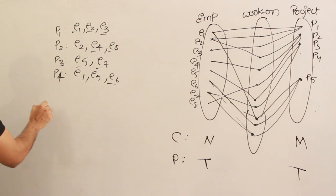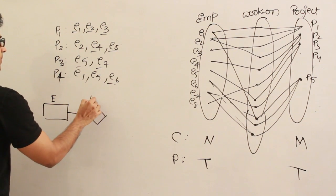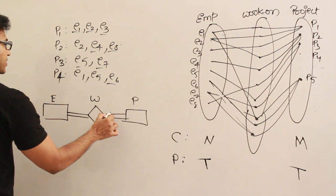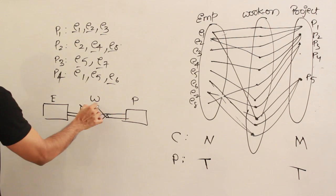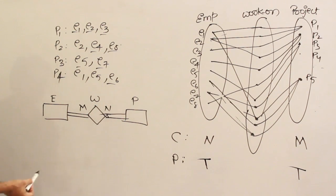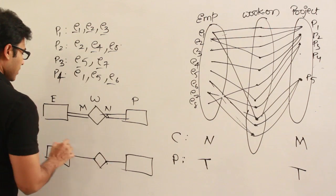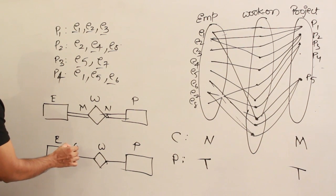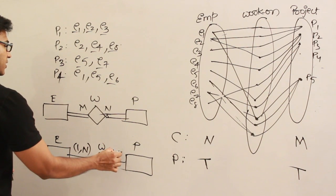How can you represent this in both representations? In the ER diagram, employee — works on — project: it is total participation on both sides, therefore use double lines on both sides. The cardinality mapping is M to N — you can put M on either side, both indicate a many-to-many relationship. In the min-max representation: for the employee side, minimum is 1 and maximum is N; for the project side, minimum is 1 and maximum is M.